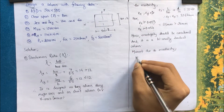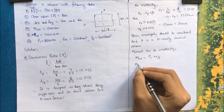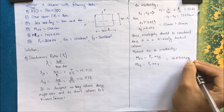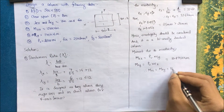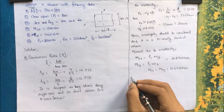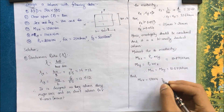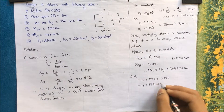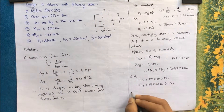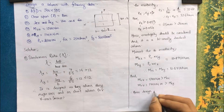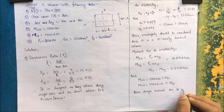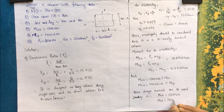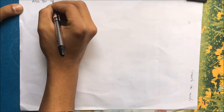Moment due to eccentricity: mex = Pu × ey and mey = Pu × ex, both equal to 81.675 kN·m. The applied moments are mux = 120 kN·m > mex and muy = 170 kN·m > mey. Hence we take the greater moments for design: design moment mux = 120 kN·m and muy = 170 kN·m.